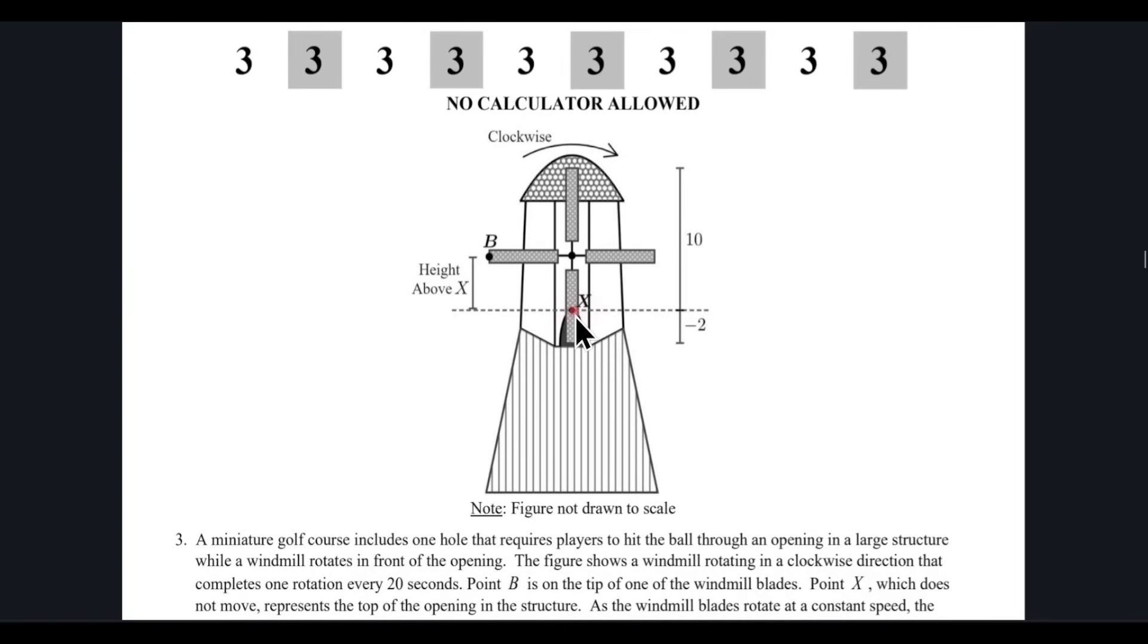This x is a hole which we cannot see, it is behind the windmill via which the players are supposed to pass the ball through, and the windmill is rotating in front of the hole. It is rotating in clockwise sense. Here it is given that it completes one rotation in every 20 seconds, so one rotation in 20 seconds would mean that the value of t is 20 seconds because one cycle is in 20 seconds.